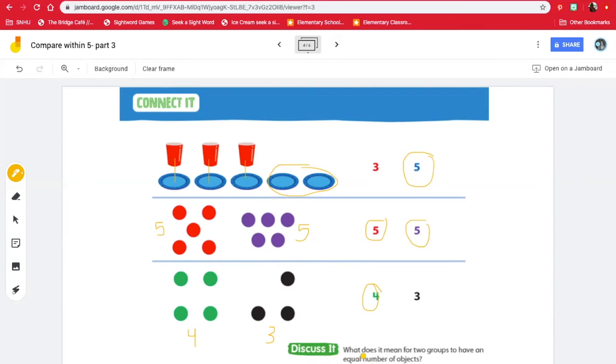Now, it says, what does it mean for two groups to have an equal number of objects? Well, we know that this middle row shows an equal number of objects. An equal means that they're showing the same amount. They both have five.